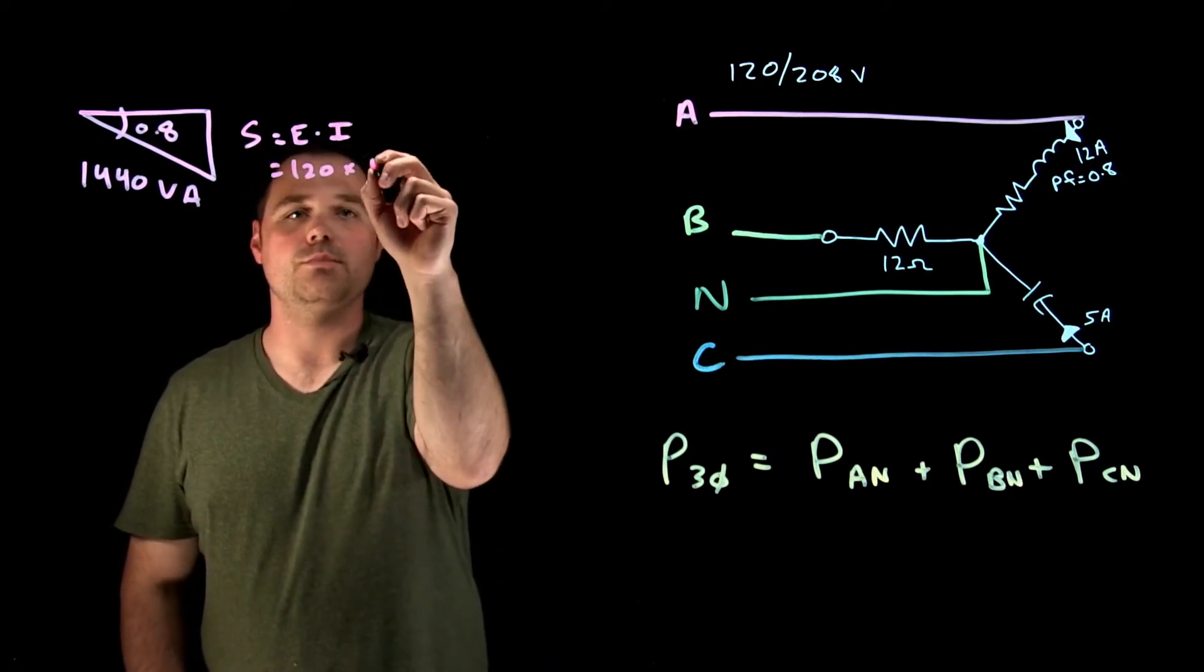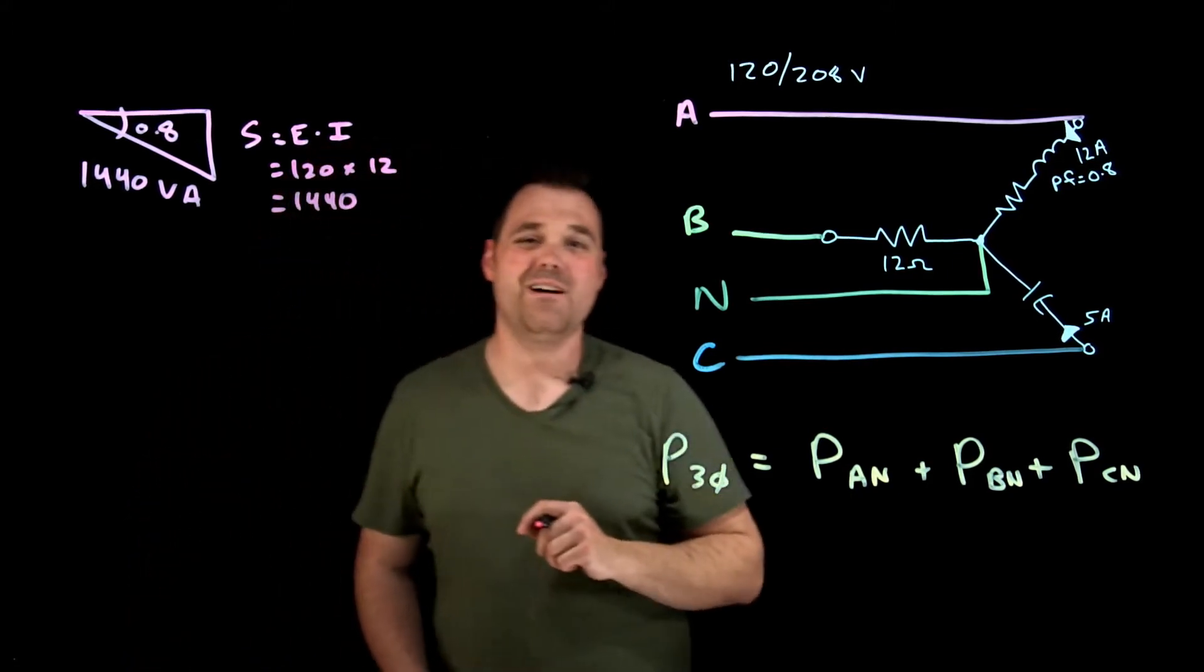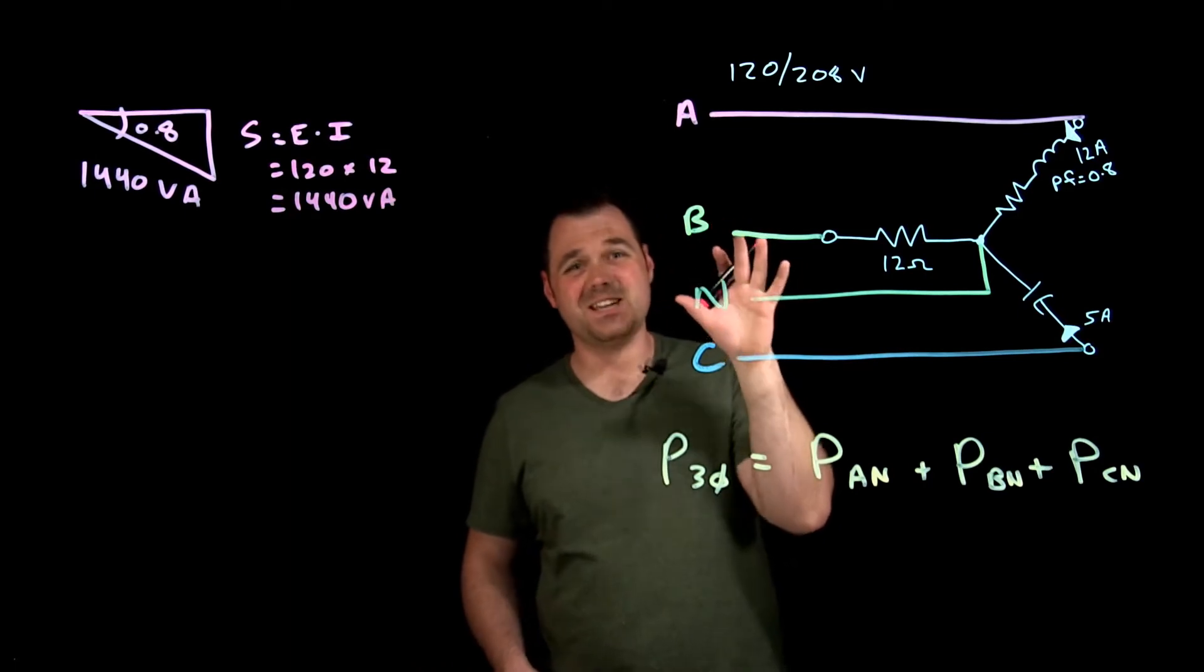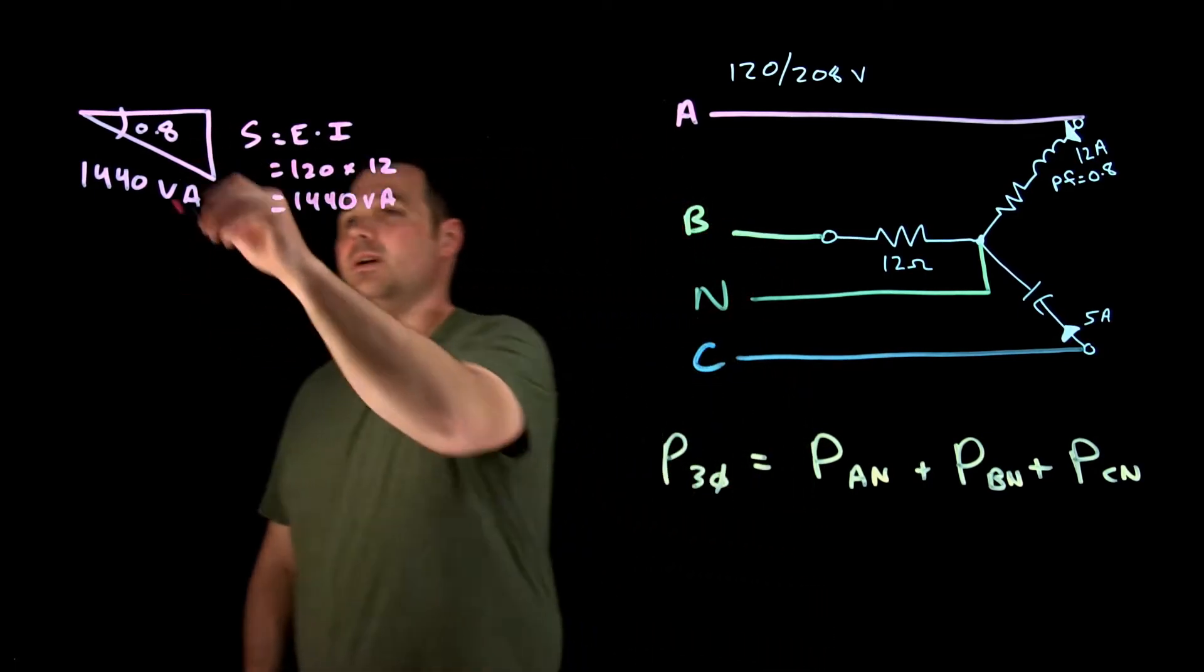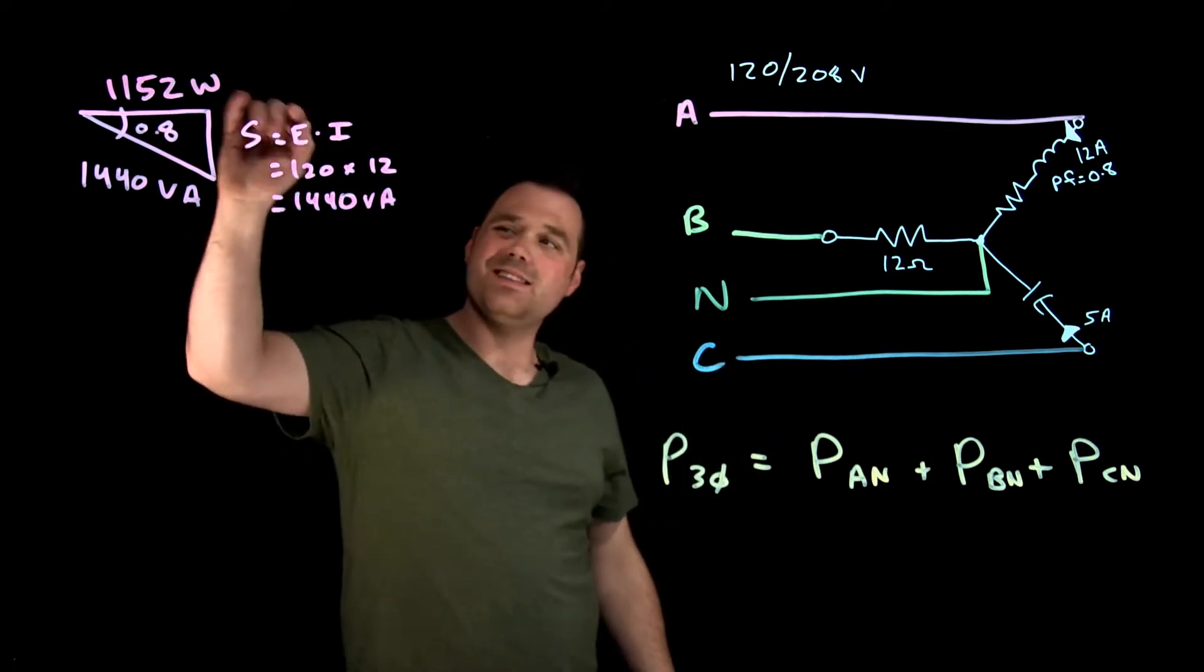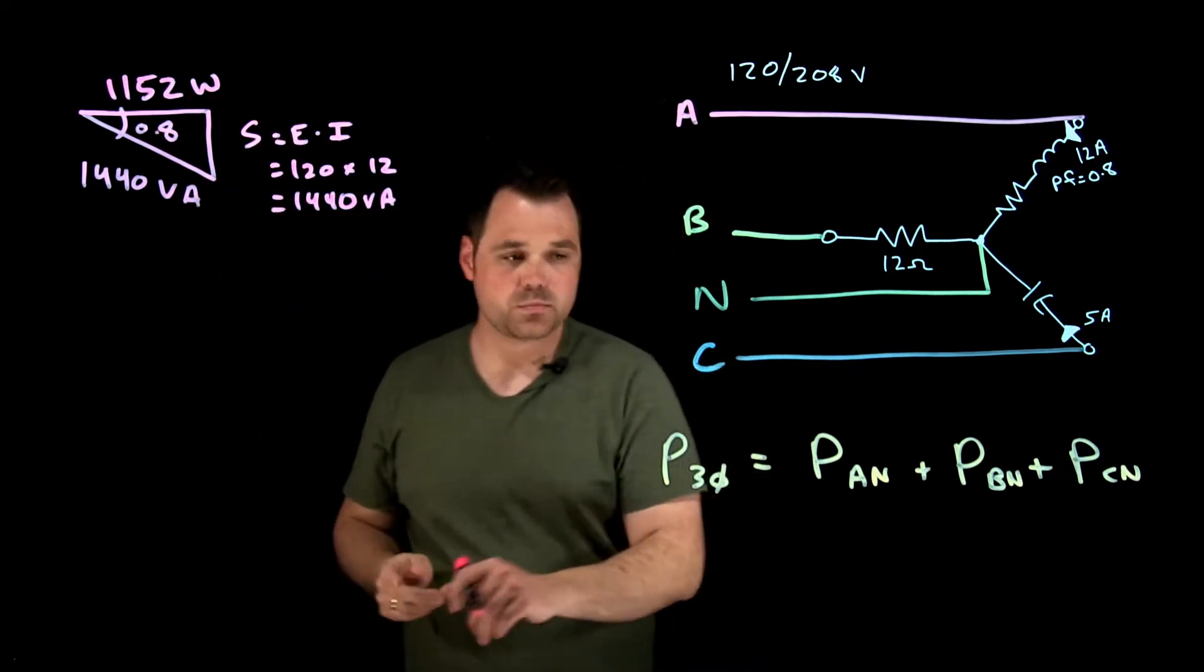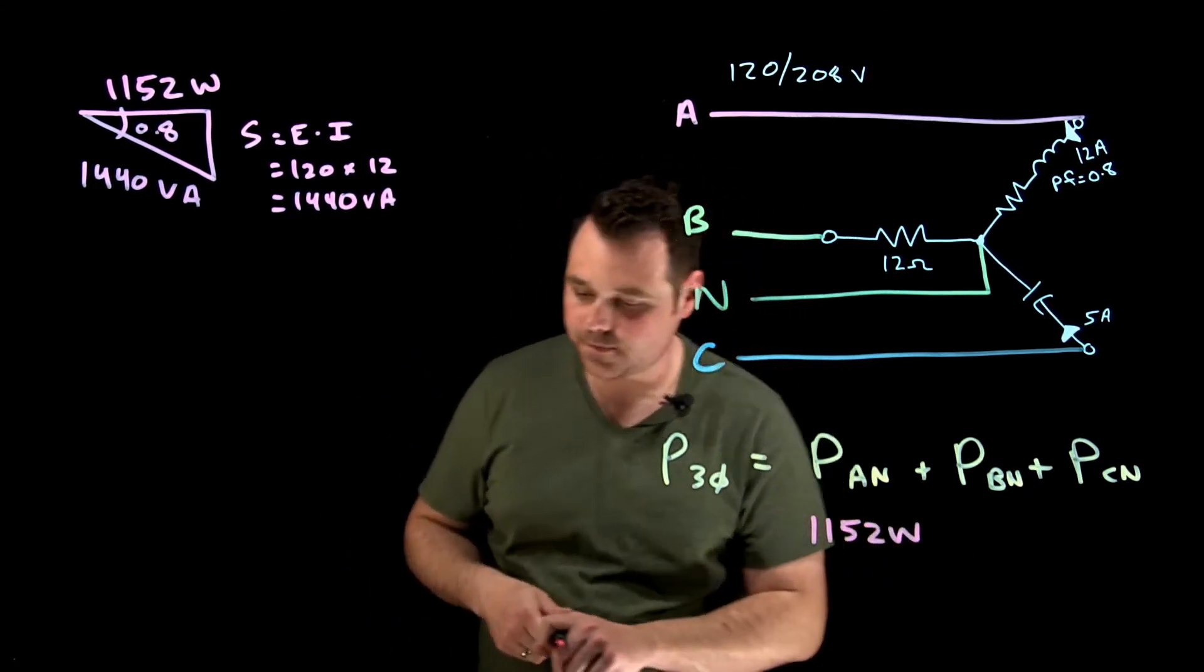So I got 120 times 12 gives me that 1440 VA. That's really important that I'm using the phase voltage. Use my power factor and that can get me 1152 watts. So 1440 VA, 1152 watts. Fantastic. Now I know phase A. So I'm going to put that down here, 1152 watts.